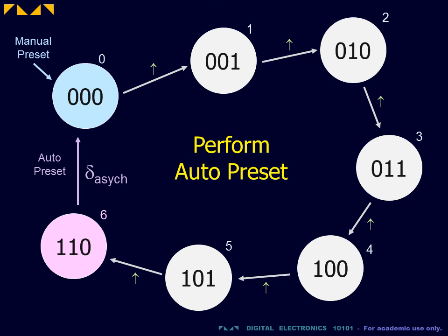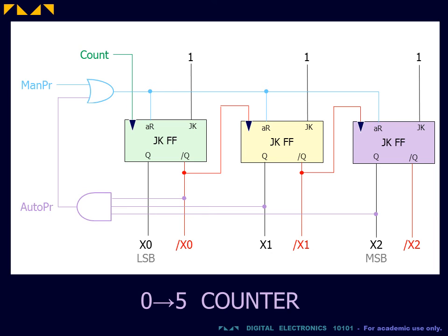For the second step, the auto preset must be passed along with the manual preset to the asynchronous inputs of the flip-flops. This is implemented using an OR gate that will force a reset of each of the flip-flops at either a manual preset or at the auto preset.